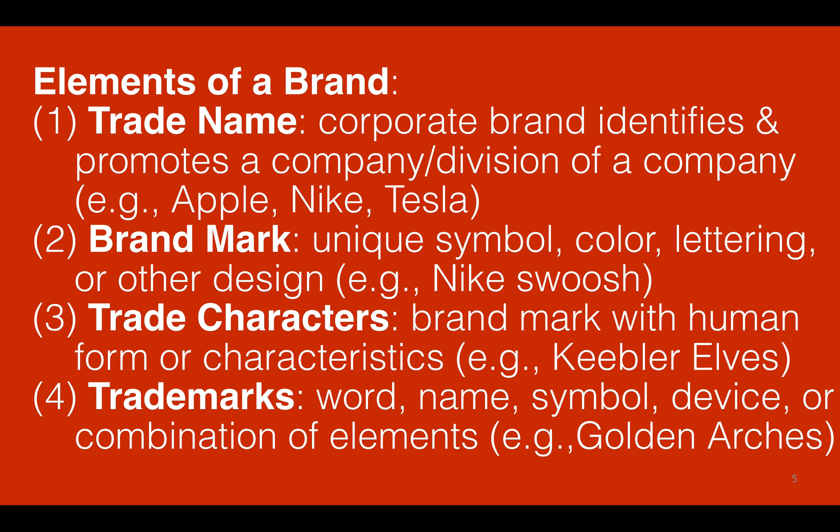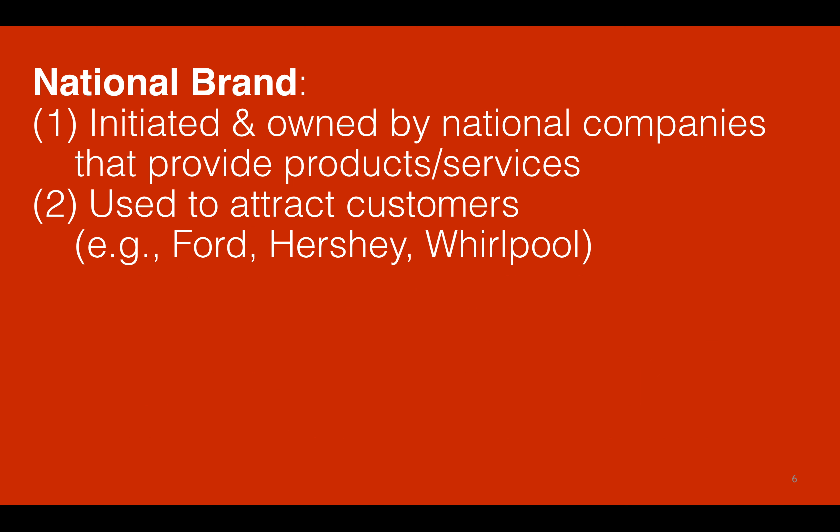There are also trade characters — that's a brand mark with human form or characteristics. Think of something like the Keebler Elves. Finally, trademarks are a word, name, symbol, device, or combination of elements. For example, McDonald's has the symbol of the golden arches as an element of their brand.